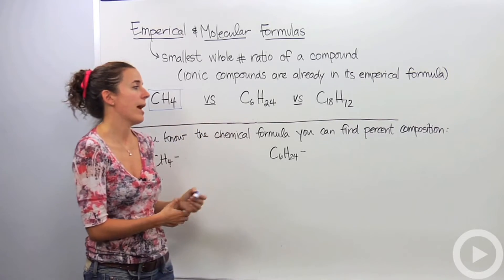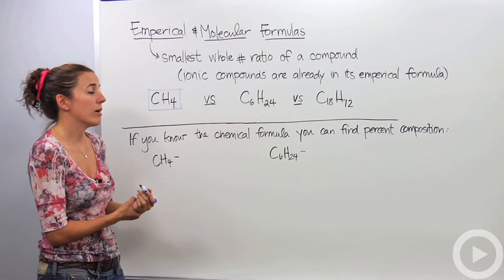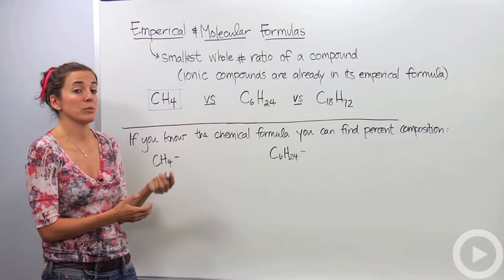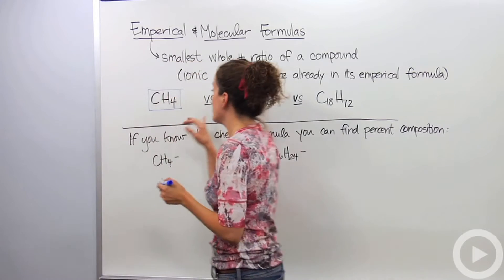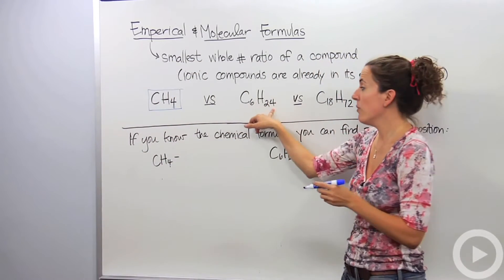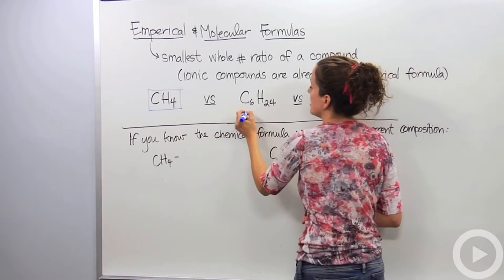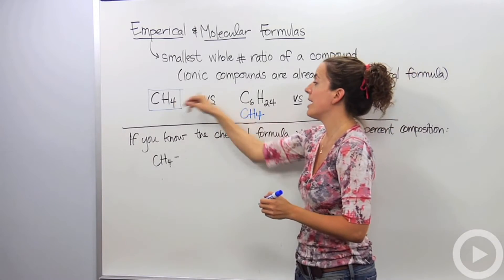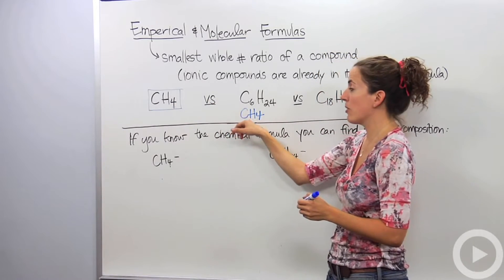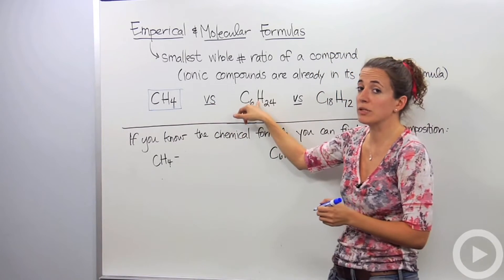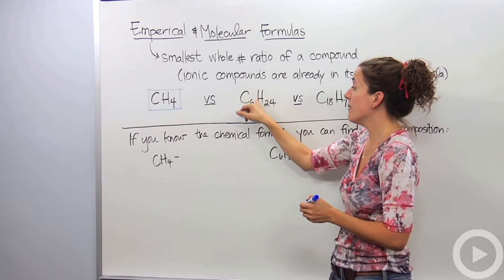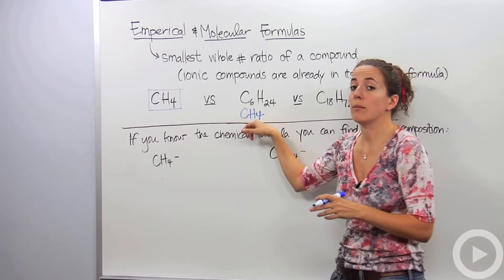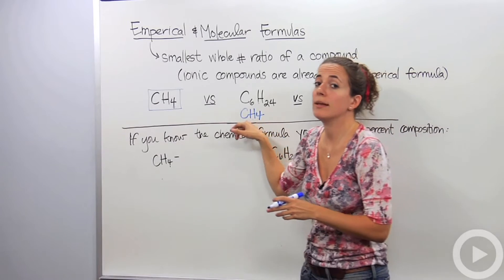Let's look at C6H24. These numbers can actually be reduced to a lower ratio. 6 can go into 6, and 6 can also go into 24, making it CH4. Notice they have the same empirical formula. However, their molecular formulas are very different — they have different chemical properties. But the empirical formula is the same, which actually comes in handy later on.